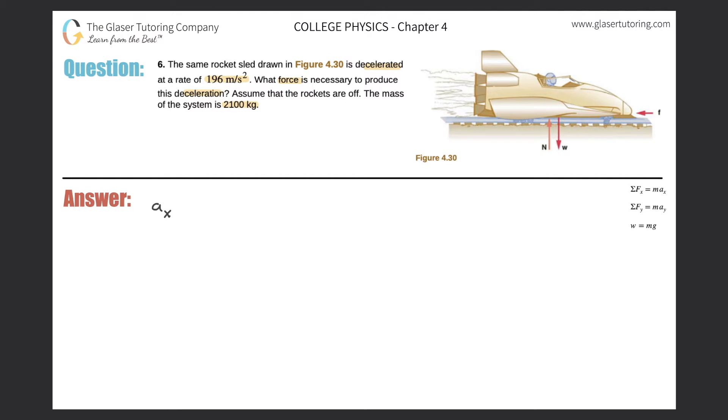So that means that the acceleration in that x direction will be negative 196 meters per second squared. Okay, wonderful. Now it says what force is necessary, so we're looking for the force value, or in other words, we're looking for the sum of the forces in that x direction. And it also says that the mass of this object is going to be 2,100 kilograms.